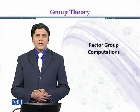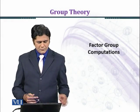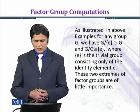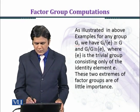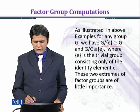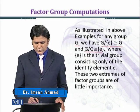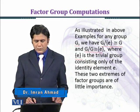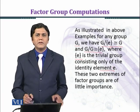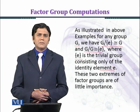In this module we shall discuss a little more about the structures of the factor groups. As illustrated in the examples of the previous module, for any group G we have G over singleton {e} isomorphic to G, and G over G is isomorphic to singleton {e}, where singleton {e} is the trivial group consisting only of the identity element e.